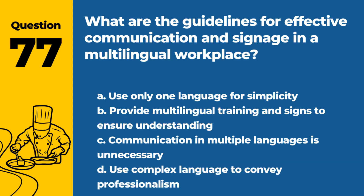Question 77. What are the guidelines for effective communication and signage in a multilingual workplace? A. Use only one language for simplicity. B. Provide multilingual training and signs to ensure understanding. Answer: B. In a multilingual workplace, it's important to provide training and signage in multiple languages to ensure all staff members understand important food safety practices.